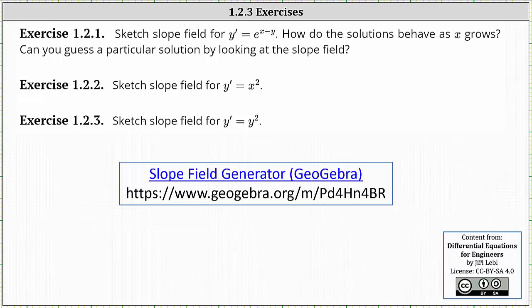In this lesson, I will show how to use the GeoGebra slope field generator to graph slope fields for the differential equations y prime equals e to the power of the quantity x minus y, y prime equals x squared, and y prime equals y squared.